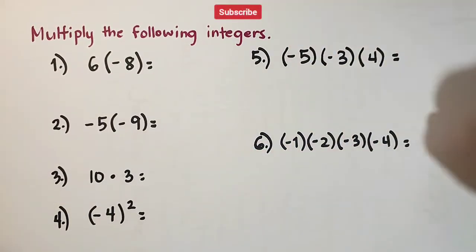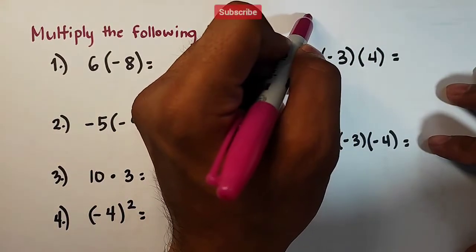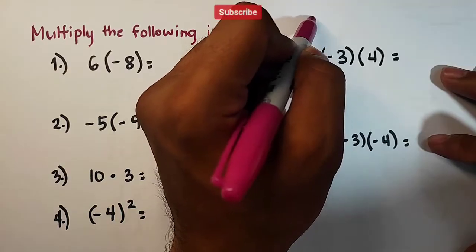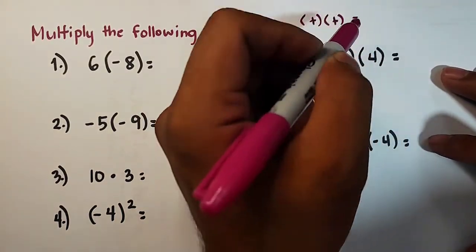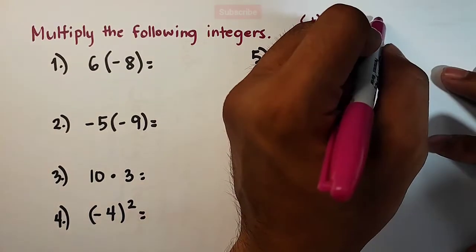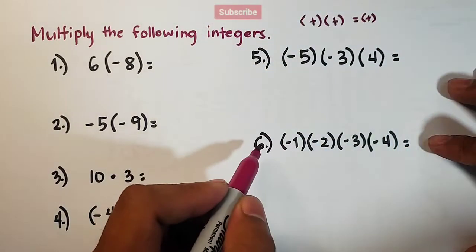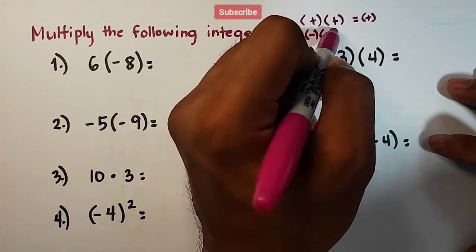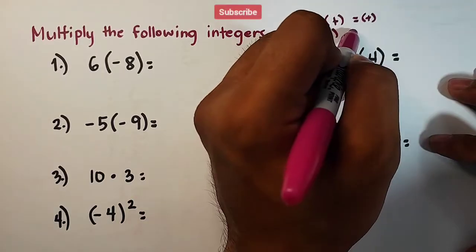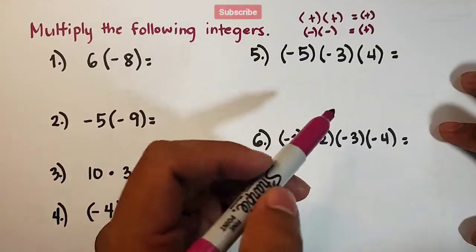Now, if you will multiply two integers, this is our rule. If you have positive times positive, that is equal to a positive answer. If you have negative times a negative integer, that is also equal to a positive integer.